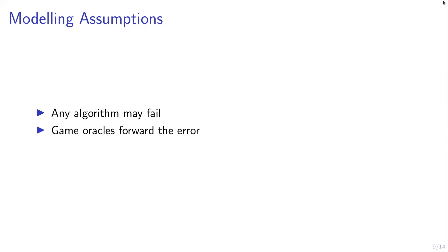It is bad practice to leak information in error messages, and our model actually captures this. Such a scheme may be secure in other models, but in our model this leakage is forwarded to the adversary, who can use it to win the game. Any algorithm that does not leak information with its error message will be fine, but if an algorithm does leak information, it will not be secure in our model — as one would intuitively expect.